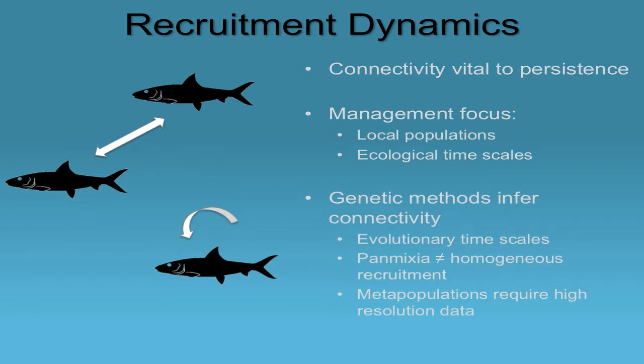Recruitment dynamics encompasses many issues, but I'm talking about it practically — sources of new recruits. Population connectivity is vital to the persistence and resilience of local populations. Managers tend to focus at the local scale for practical purposes, really at ecological time scales — what's happening right now with the fishery. However, if you think about population genetic approaches, we can use these methods to infer connectivity, but what we're really interpreting is a slightly different time scale, more of an evolutionary time scale rather than a real-time ecological one.